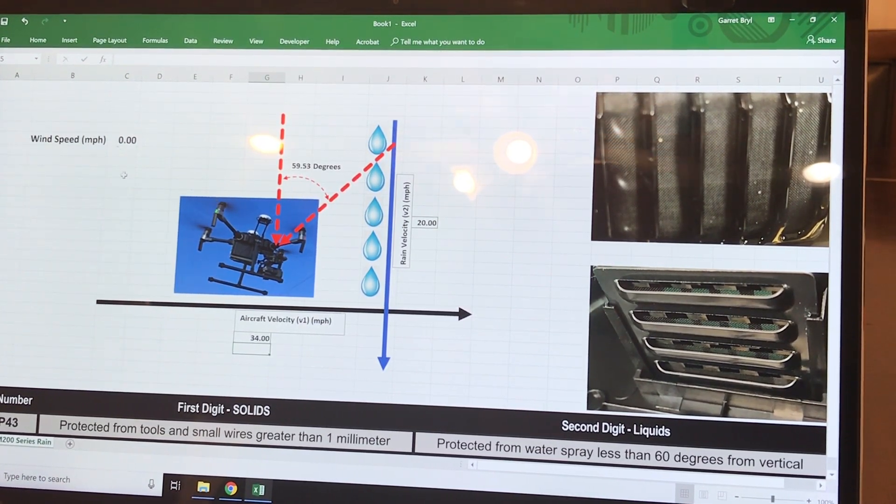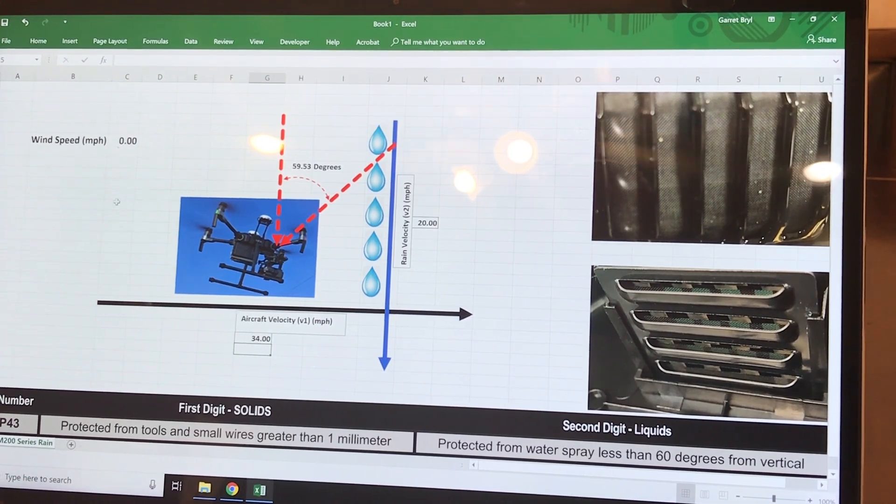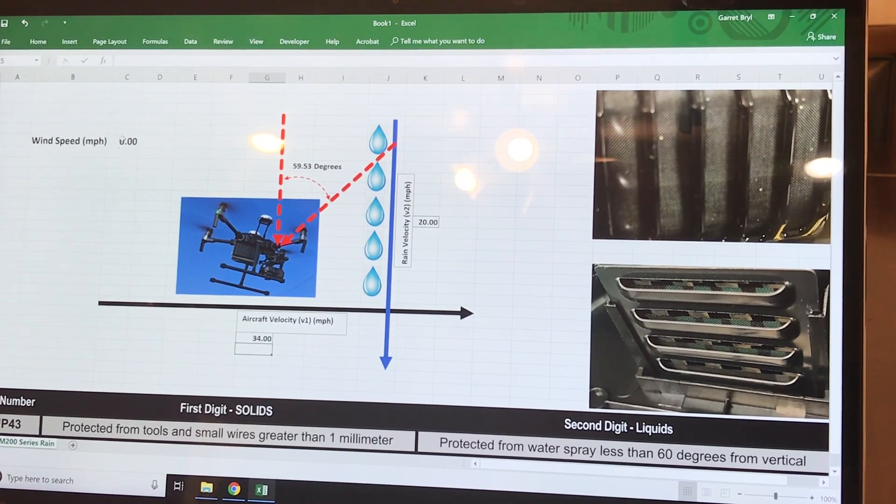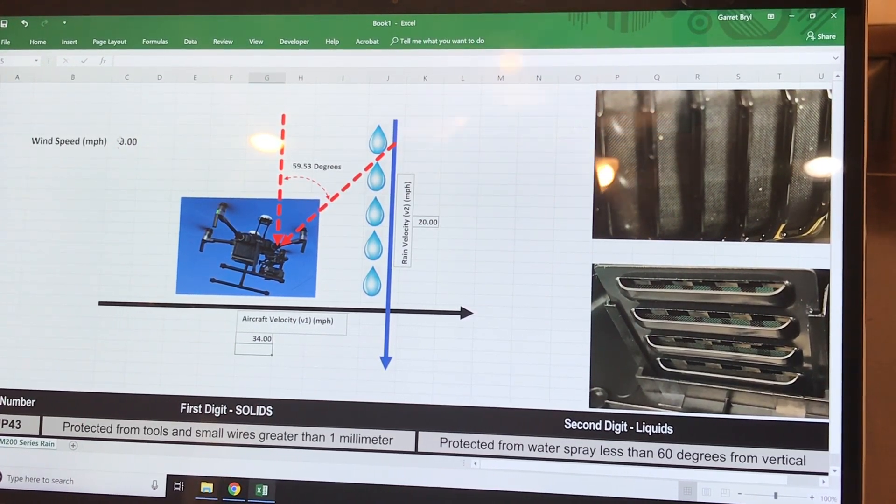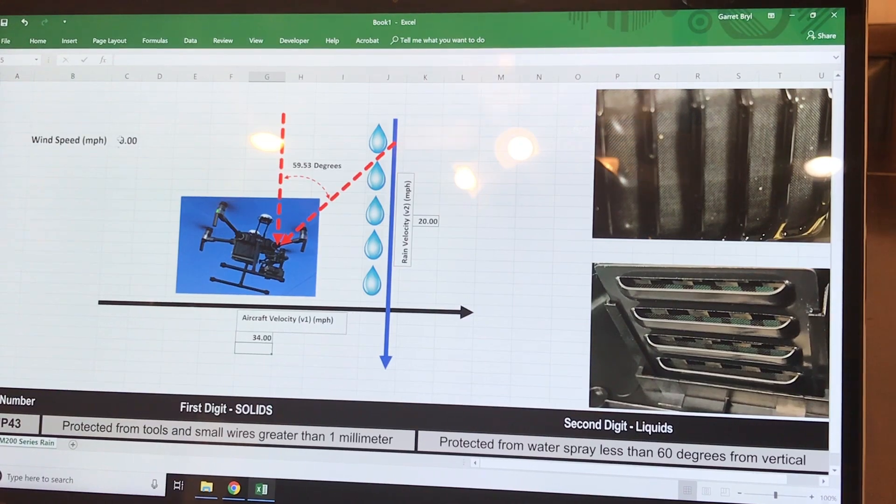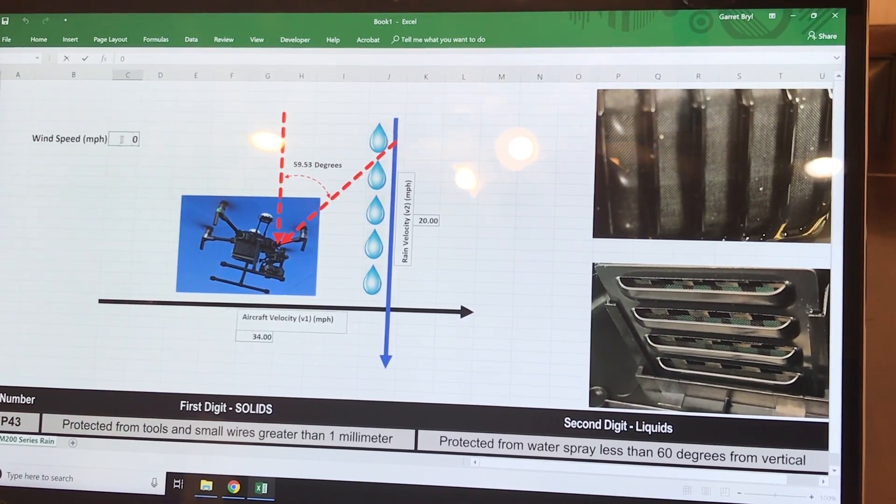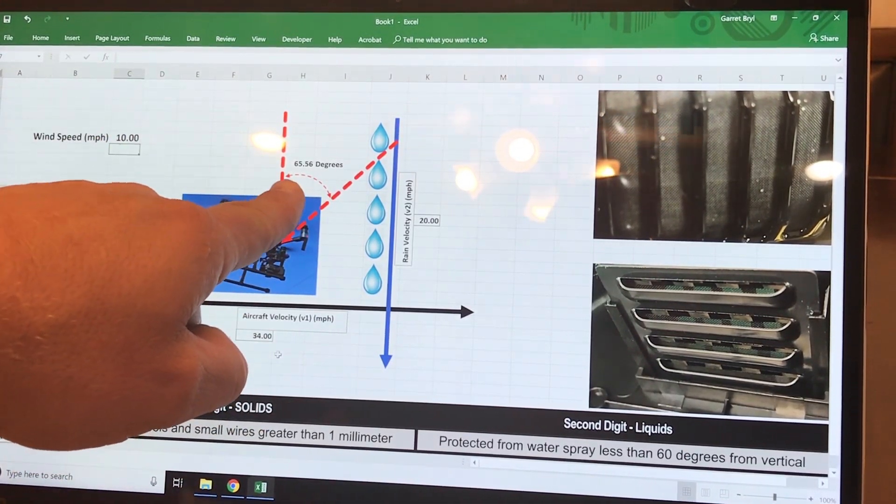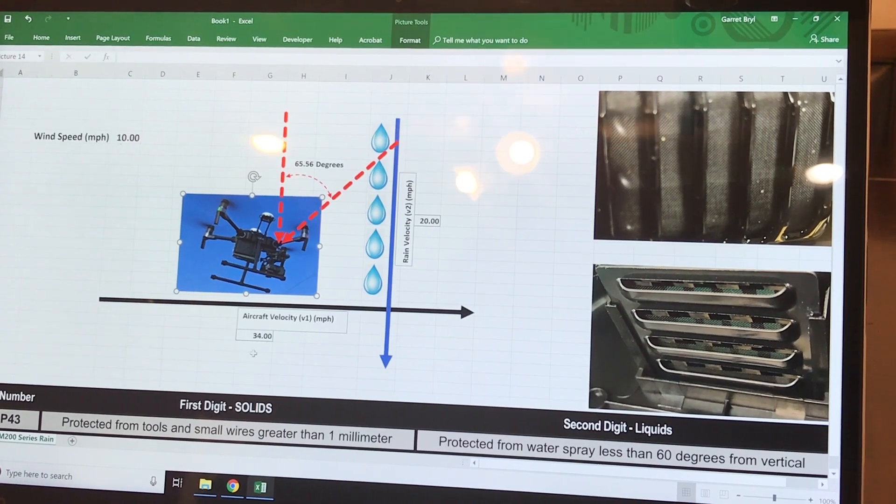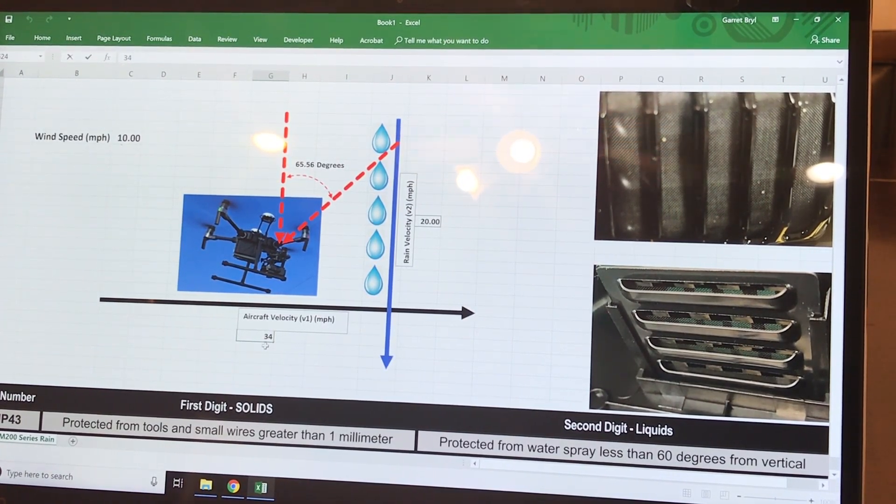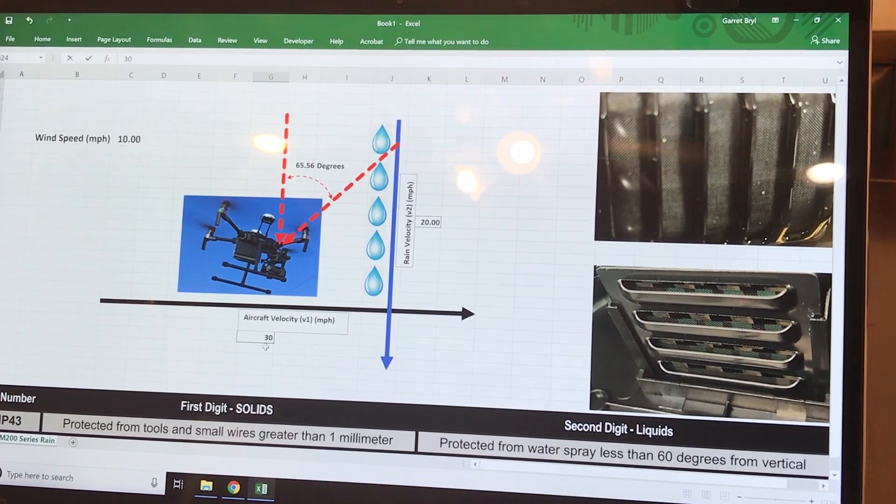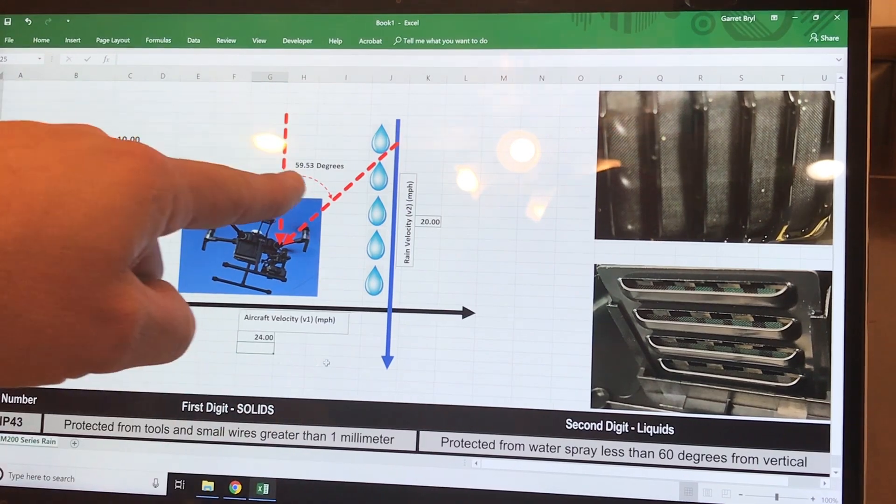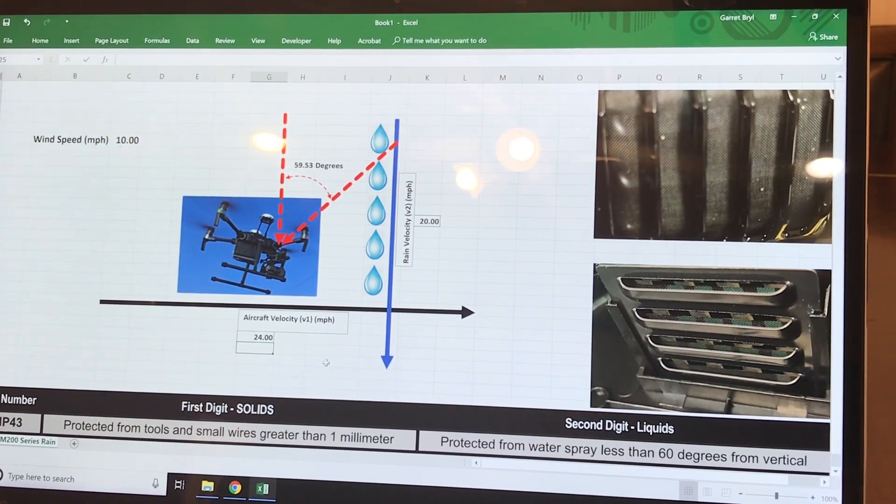So now that's under perfect conditions. What if there's a little bit of wind? It's really pretty simple: you just subtract the wind speed from your velocity. If you have a 10 mile an hour wind, then your maximum speed is going to be 24 miles an hour. I'll just show you. We'll put in 10 mile an hour wind here. Now you can see we're above 60, and then here we'll have to reduce our aircraft speed down to 24 miles an hour. Now you can see we're below that.